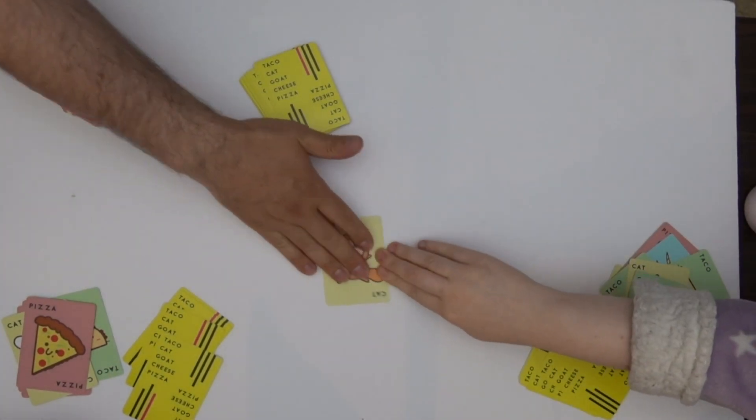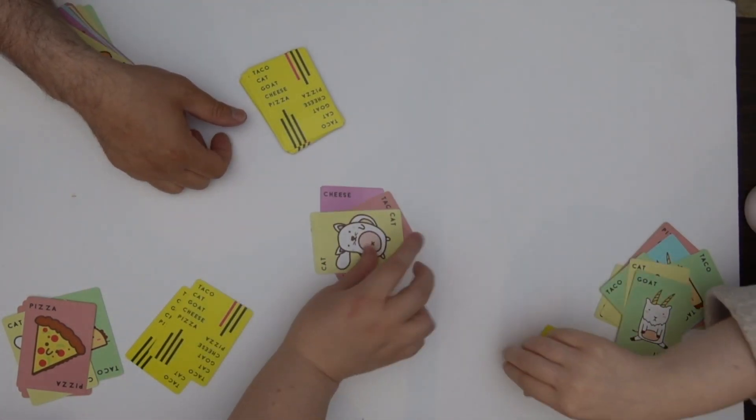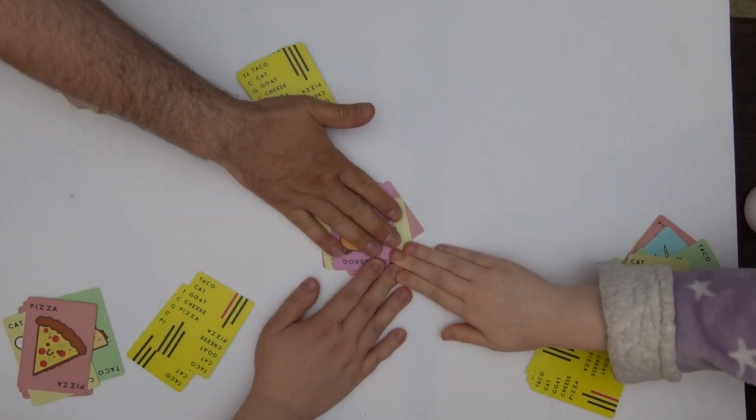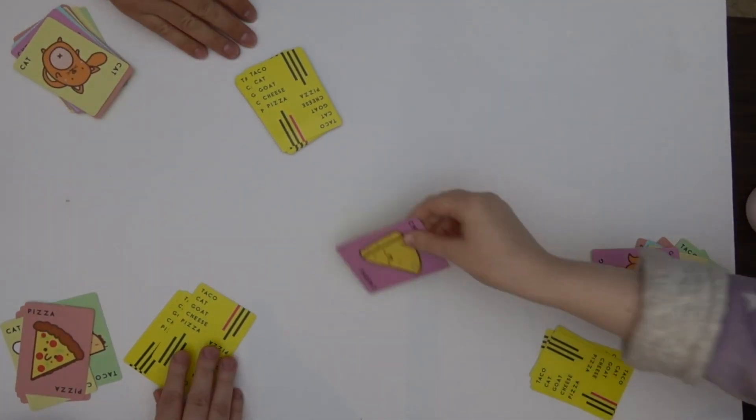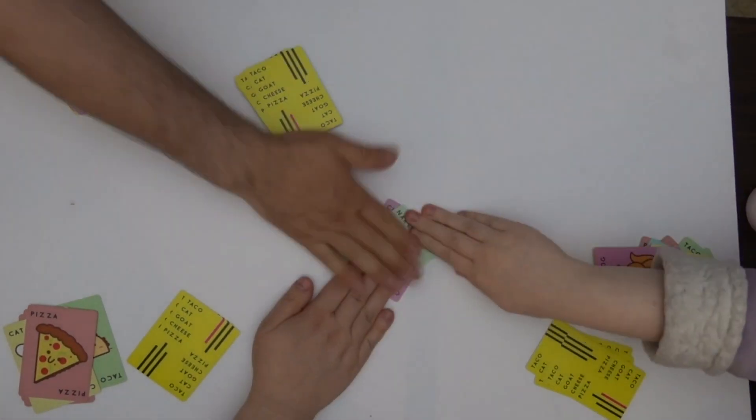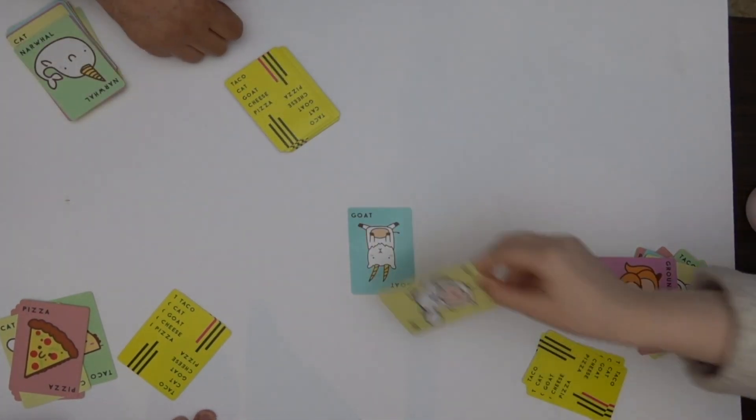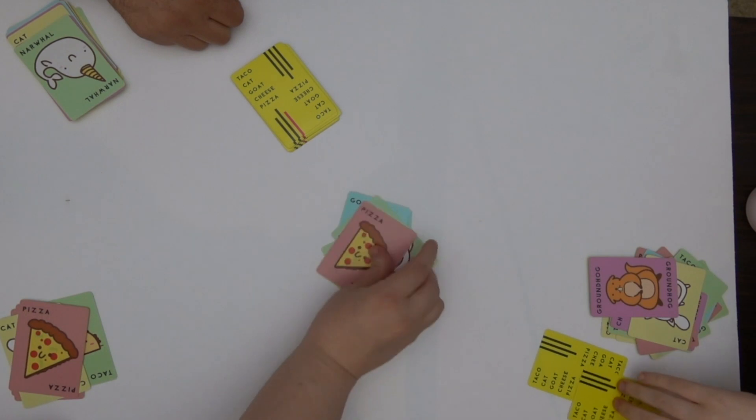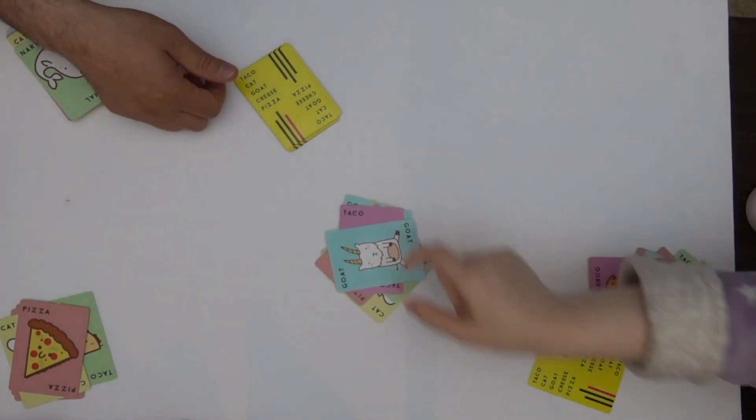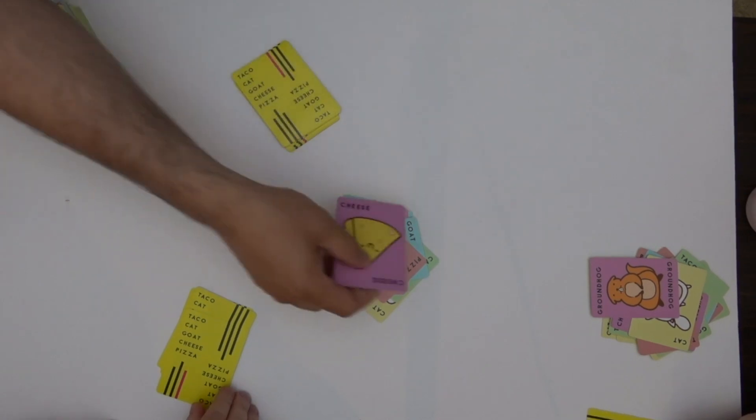It's because I can't tell things apart. Pizza, taco, cat, goat, cheese, pizza, taco. This poor board, our poor fingers. Cat. Cat, goat, cheese, pizza.